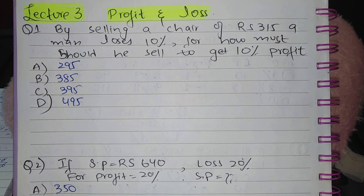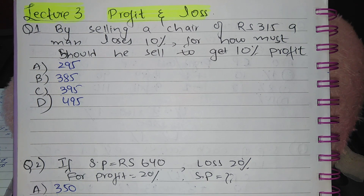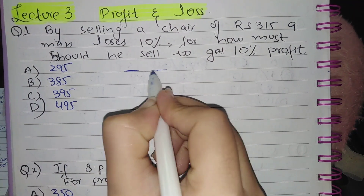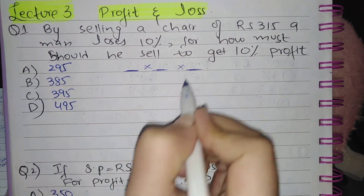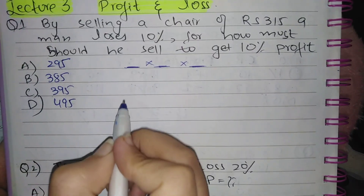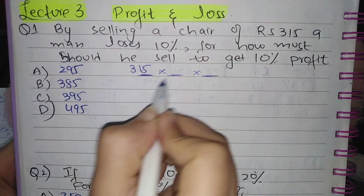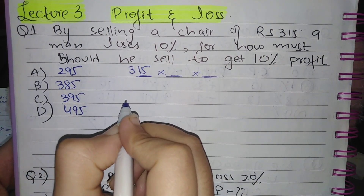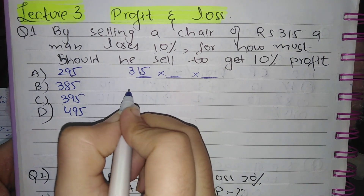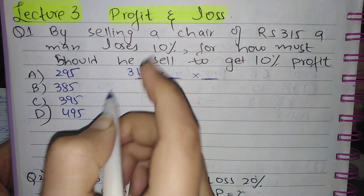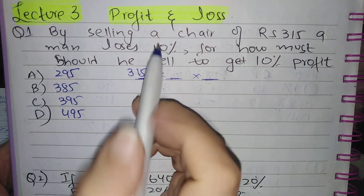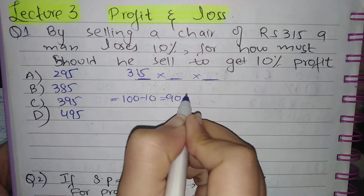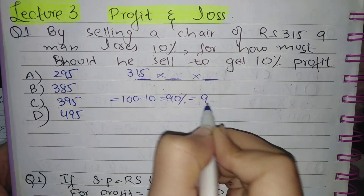To solve this type of question, the answer involves three parts. The first part is the selling price which is given. The second part includes the loss percent, which is 10 percent. To calculate loss percent, subtract it from 100: 100 minus 10 equals 90 percent, which is 90 by 100, simplified to 9 by 10.